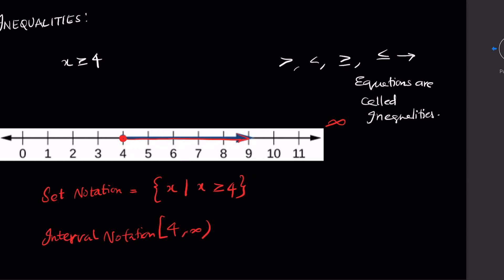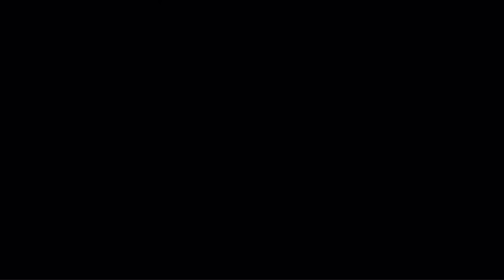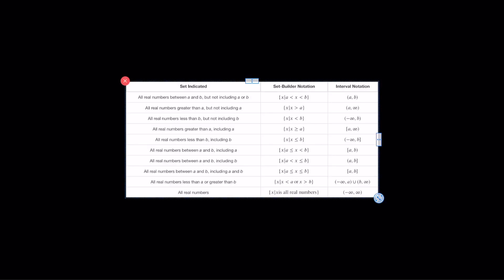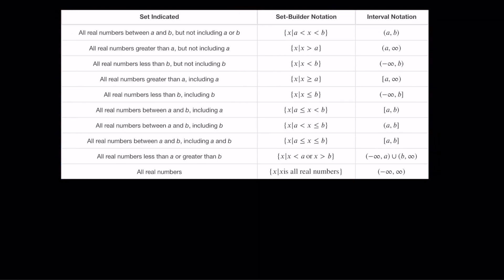How do we know what type of interval notation to use? We have a reference table. For all real numbers between a and b but not including those numbers, we write x such that a less than x less than b. Remember: less than excludes the value, while less than or equal to includes the value. This applies to greater than and greater than or equal to as well. Greater than and less than exclude the value written before them.